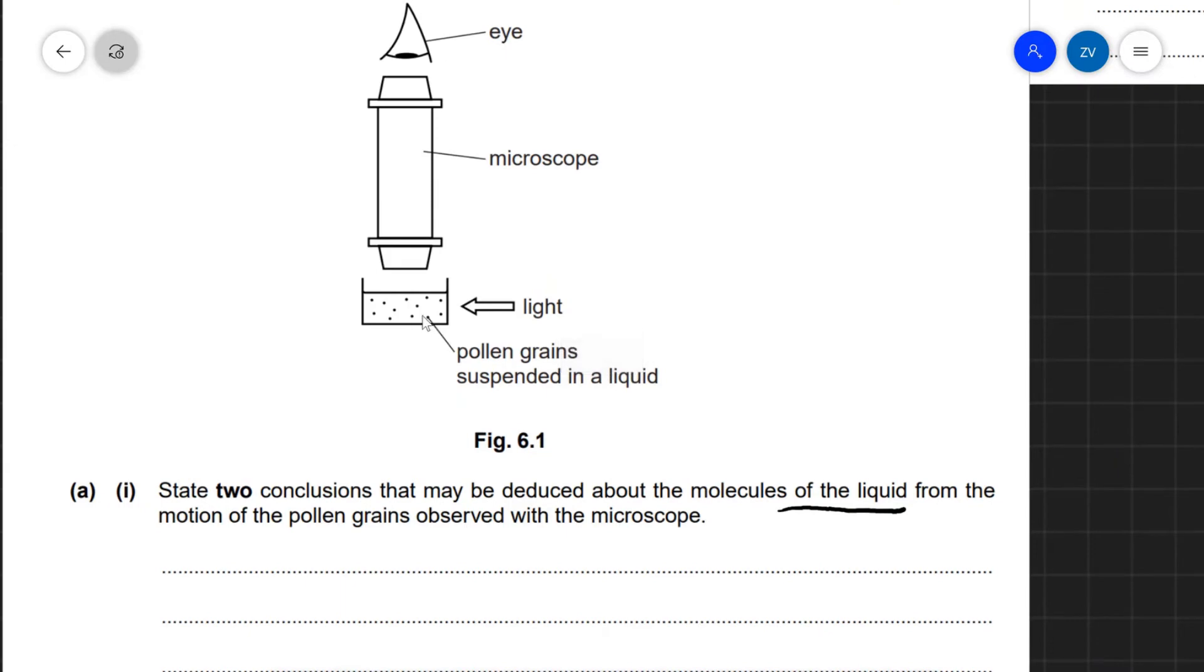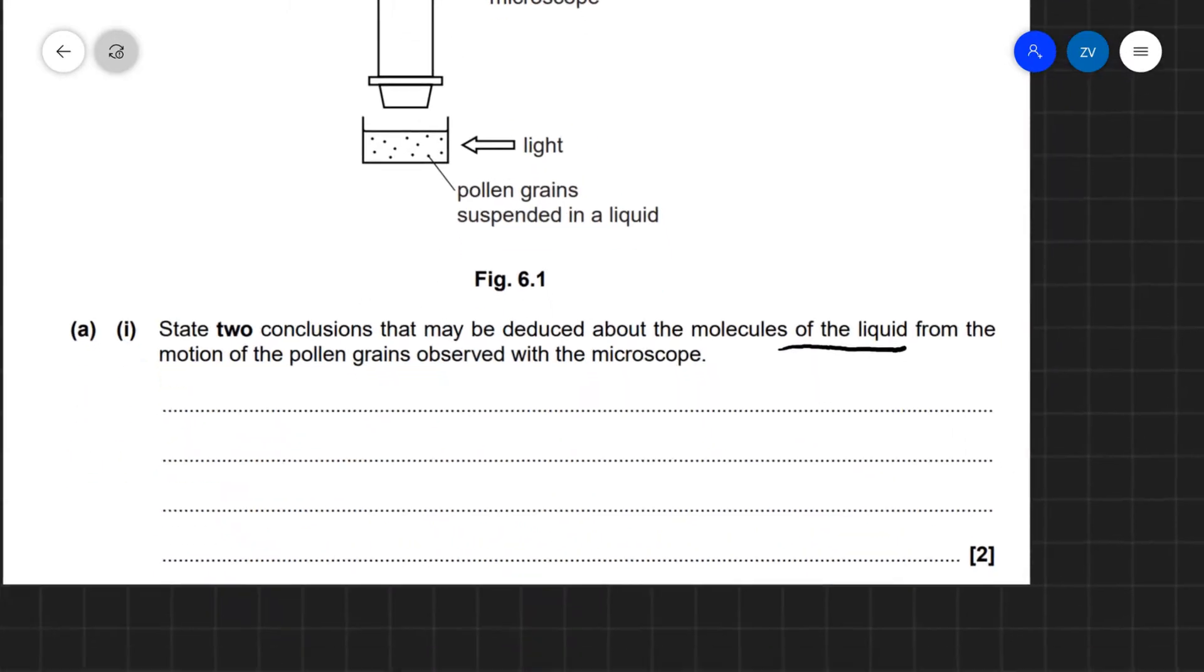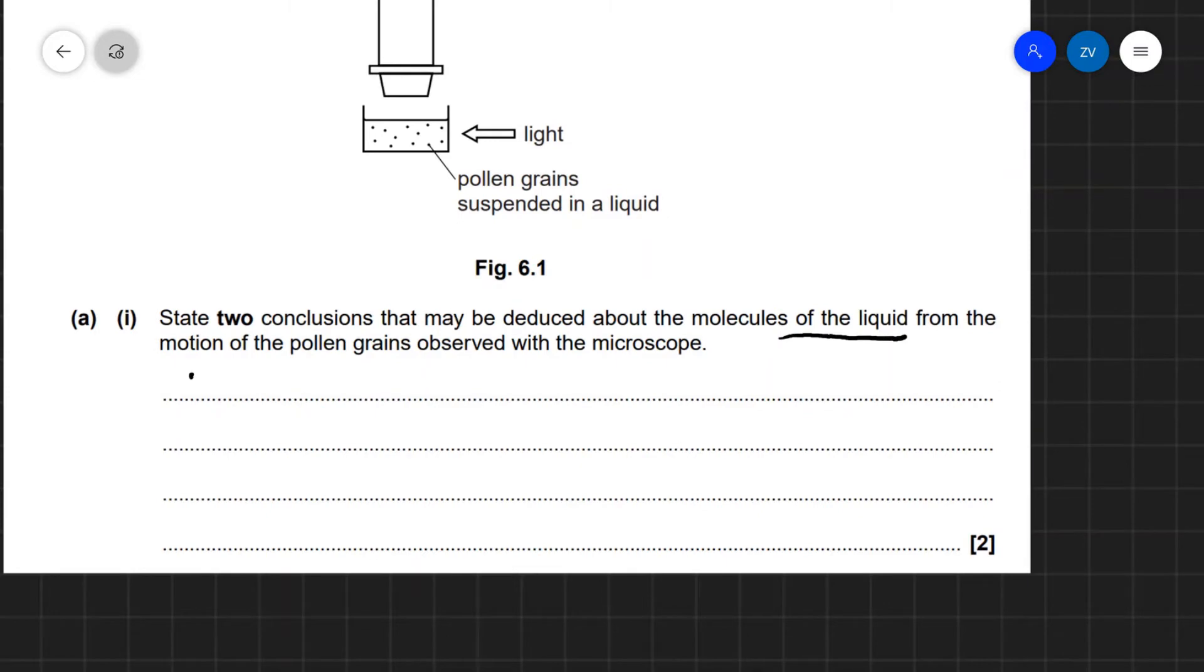The first thing we're going to notice is that the pollen grains are moving in a random motion. The reason why they're moving in a random motion is because they're in constant collisions with the molecules of the liquid, and therefore the molecules of the liquid must be moving in random motion as well. So let's just write that over here. The molecules of the liquid are in random motion.